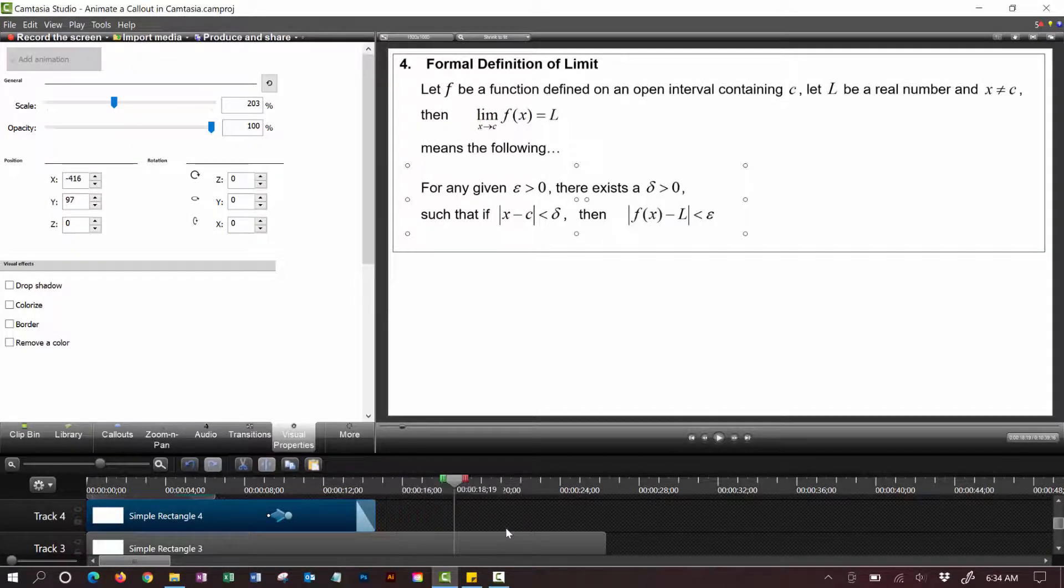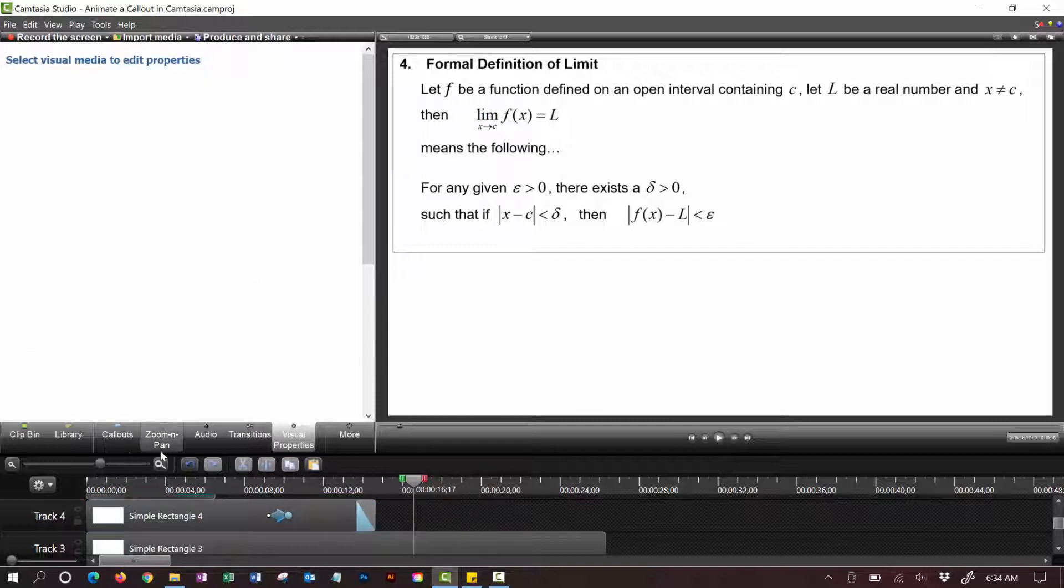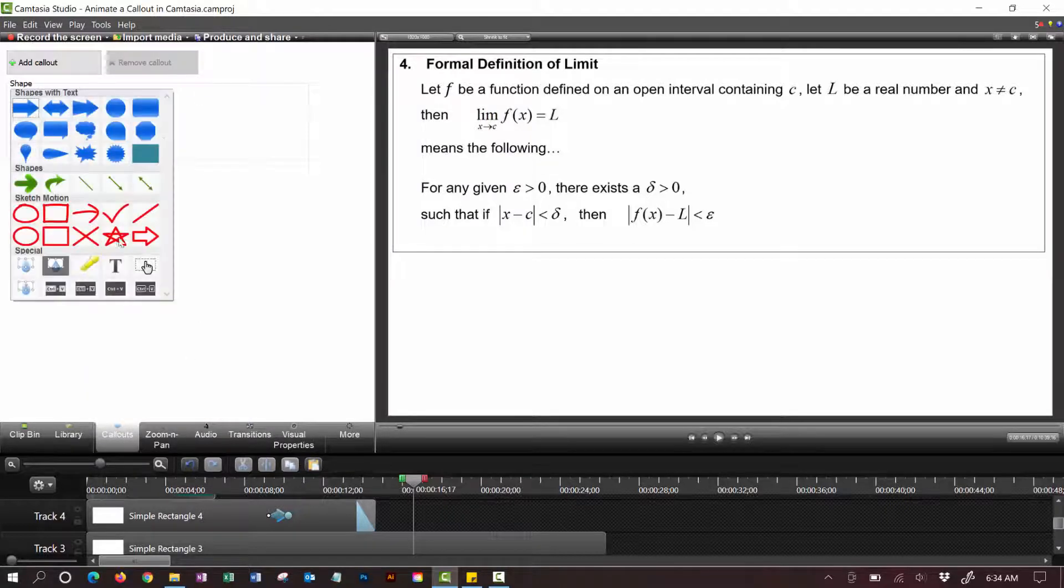Now if I want to highlight over certain areas and have that highlighter move I could come to wherever it is in the video click on call out click the down arrow and select highlighter.